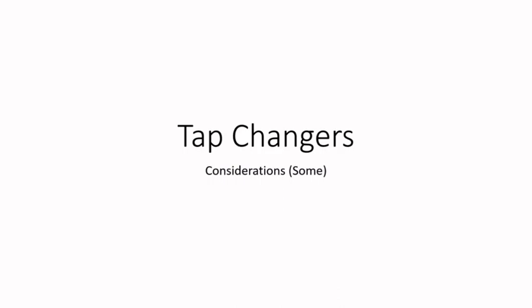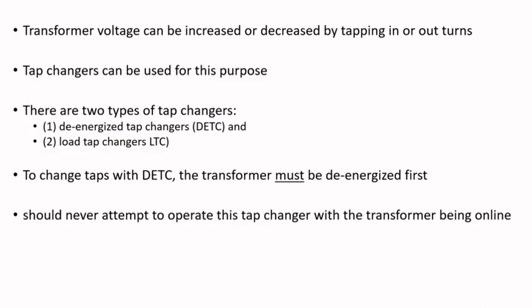In this short video I'll talk about some considerations regarding tap changers. Transformer voltage can be increased or decreased by tapping turns in or out. If we go back to the formula, the secondary voltage is the number of turns in the secondary divided by the number of turns in the primary, times the primary voltage. So you can change taps — adding or removing turns from the circuit — to change the voltage. That's why tap changers are used.